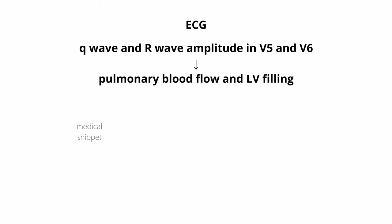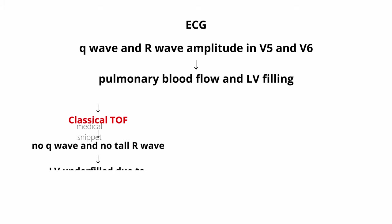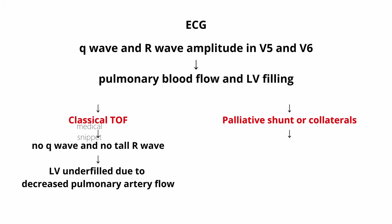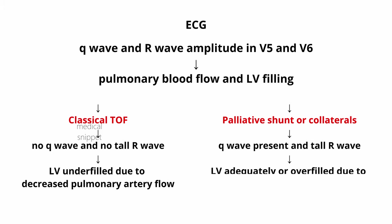The Q wave and amplitude of R waves in leads V5 and V6 indicate the magnitude of pulmonary blood flow and left ventricular filling. In classical TOF, there is absent Q wave and RS pattern, denoting that the LV is underfilled due to decreased pulmonary artery blood flow. In case of a palliative shunt or development of collaterals, there is a Q wave and tall R waves in V5 and V6, denoting adequate or increased pulmonary artery blood flow and adequate left ventricular filling.